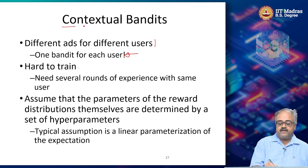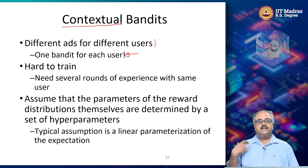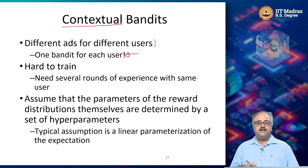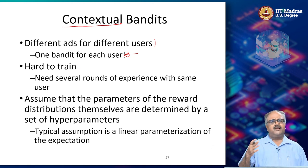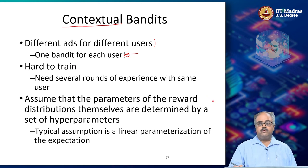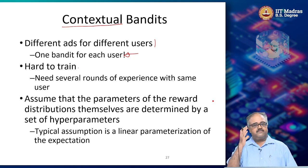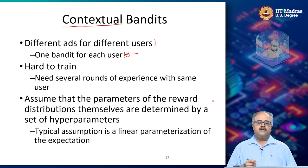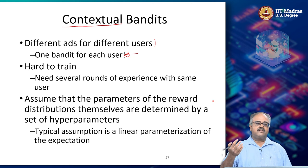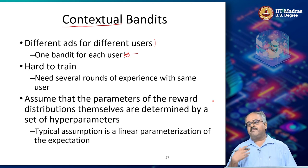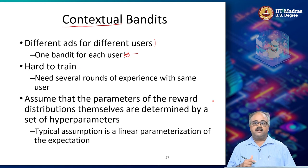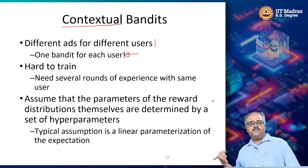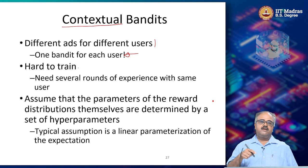Such a setting is what we call contextual bandits. We are assuming that the rewards you are going to get from the world are determined by some set of parameters — you can think of these as hyper-parameters. There is a mean mu and a variance sigma. Each arm's reward comes from some Gaussian, so there is a mean mu and variance sigma for that Gaussian. I am saying that the mean mu and variance sigma of the reward distribution are determined by some function of the features of the user.